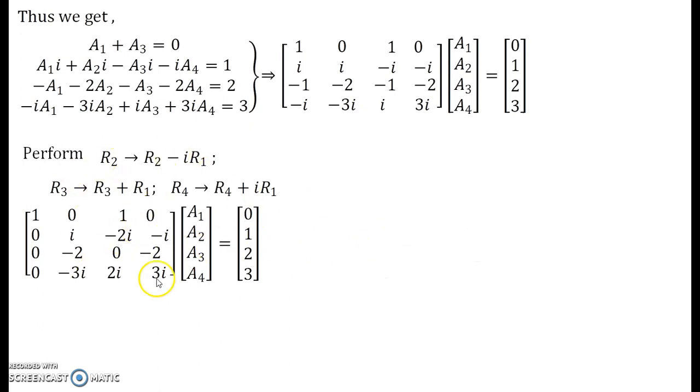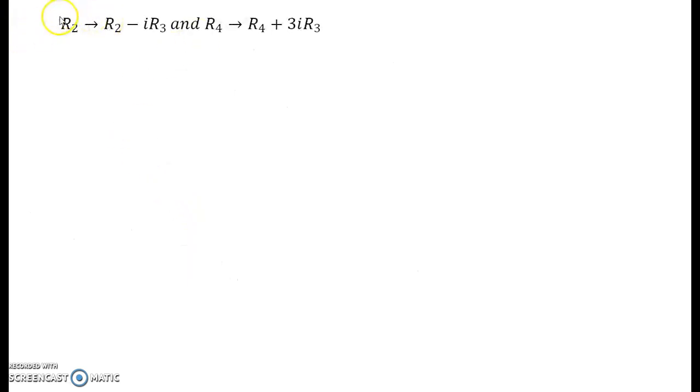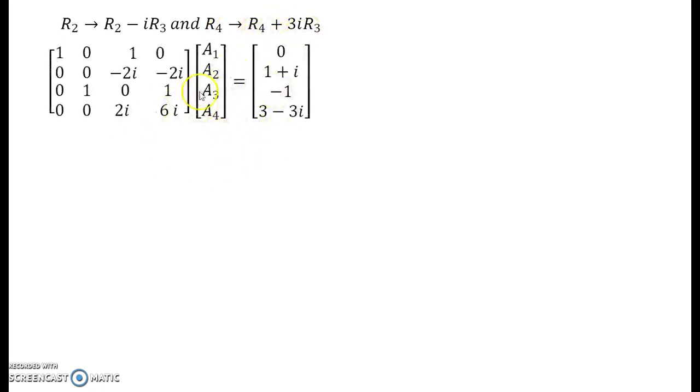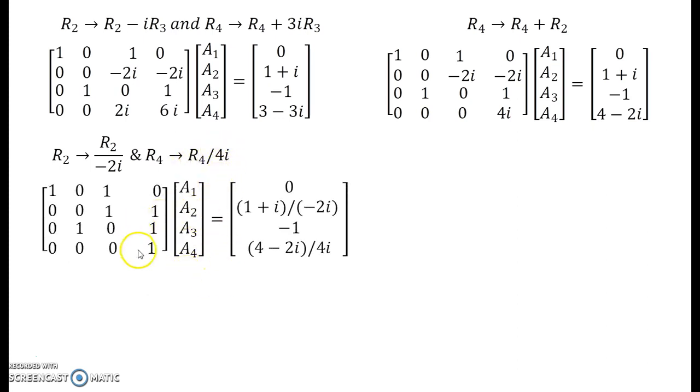Further, on this once you obtain the change, you perform R_3 changing to -1/2 of R_3 and you obtain the following matrix. On both sides the change is being taken care. Observe carefully. Now further you perform R_2 changing to R_2 - iR_3 and R_4 changing to R_4 + 3iR_3, and you obtain the following changes. Then further perform R_4 changing to R_4 + R_2. Observe both sides of the matrices, the coefficient matrix and the constant matrix. So further when you perform R_2 changing to R_2 divided by -2i and R_4 changing to R_4 divided by 4i, you obtain the following matrix.